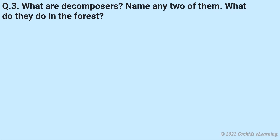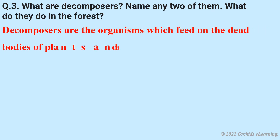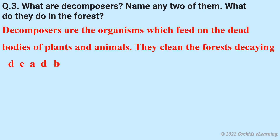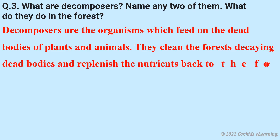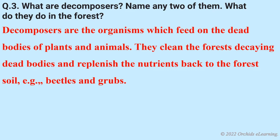Question: What are decomposers? Name any two of them. What do they do in the forest? Decomposers are organisms that feed on the dead bodies of plants and animals. They clean the forest by decaying dead bodies and replenish the nutrients back to the forest soil. Examples: beetles and grubs.